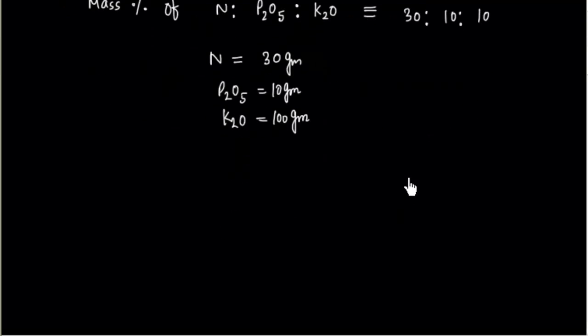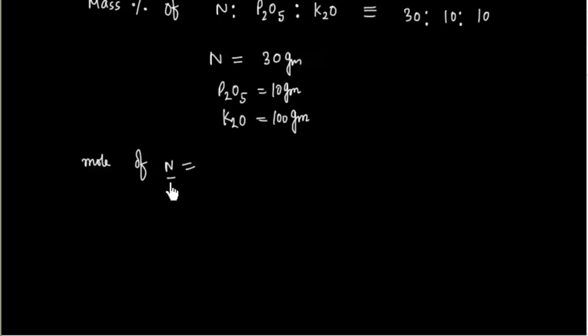Now let us find moles of Nitrogen. Moles of Nitrogen equals mass divided by molar mass, which is 30 divided by 14.